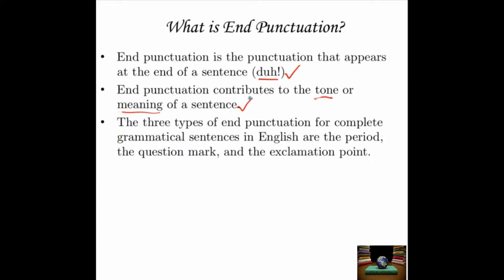The three types of end punctuation for complete grammatical sentences in English — not talking about fragments, not talking about funky punctuation somebody just made up or stuff you find in comic books. Grammatical sentences take three punctuation marks. They are the period, the question mark, and the exclamation point, also called the exclamation mark.